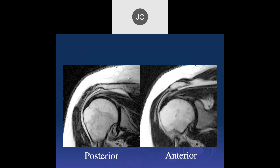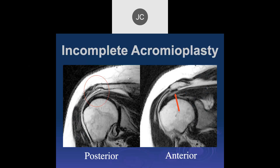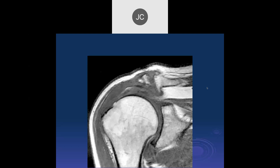Reviewing another case: coronal shoulder view shows probable acromioplasty with degenerative changes at the AC joint. The acromioplasty is larger than desired — the goal should be to convert an abnormal type 3 to normal anatomy without over-correction, which can cause superior instability. You also need to ensure osteophytes at the acromioclavicular joint are removed at the same time; this patient may have remained symptomatic due to a persistent osteophyte at the distal clavicle that wasn't removed.